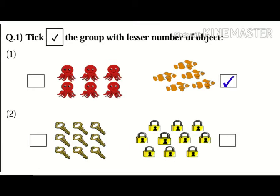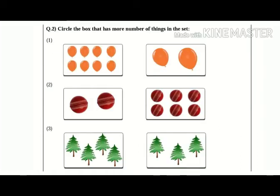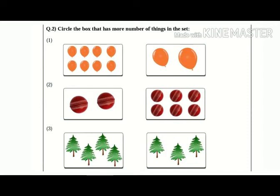So we are going to put a tick mark besides the picture of keys. Very good. Now let's move on to question number two: circle the box that has more number of things in the set. In this question we have to circle the picture of the object that has more number of objects. In the first one, on the left hand side there are eight balloons and on the right hand side there are two balloons. The left side picture has more balloons, so we are going to circle the picture on the left.